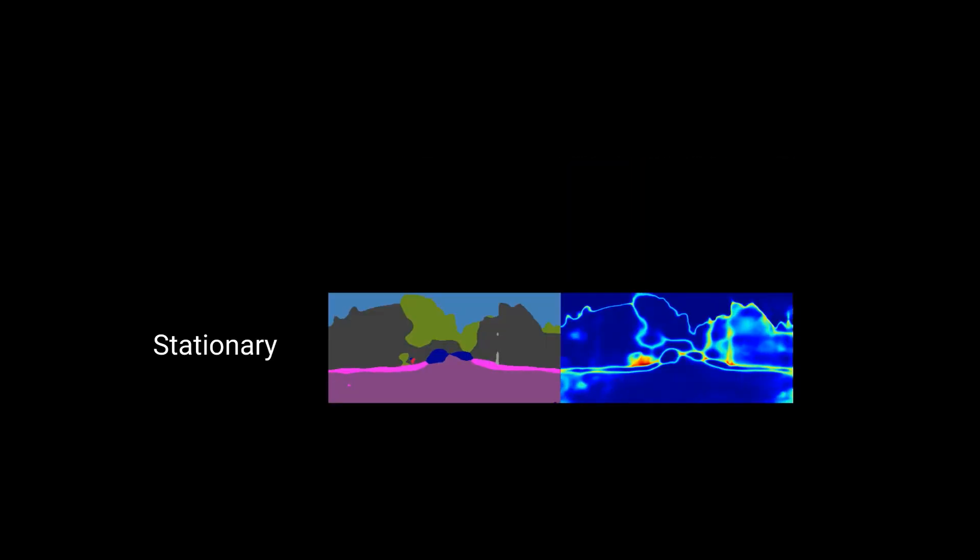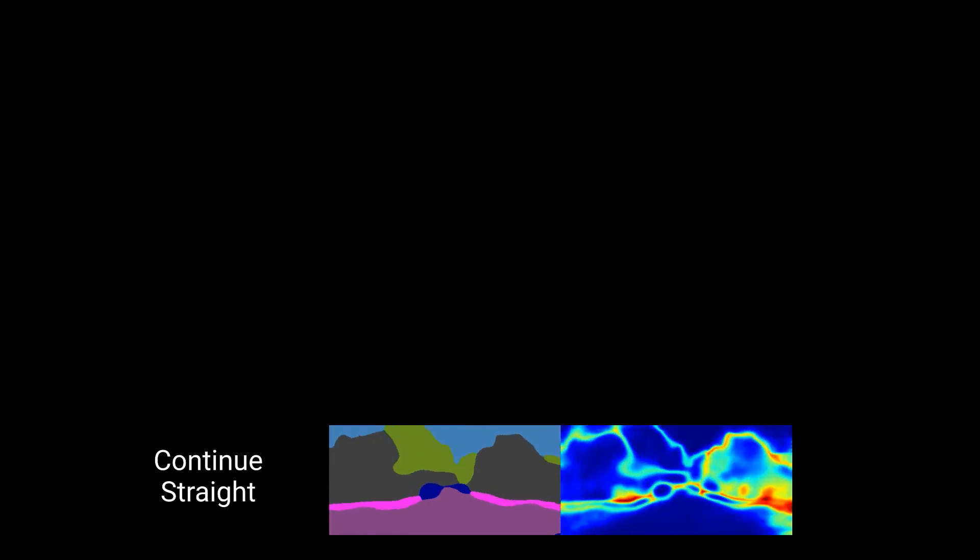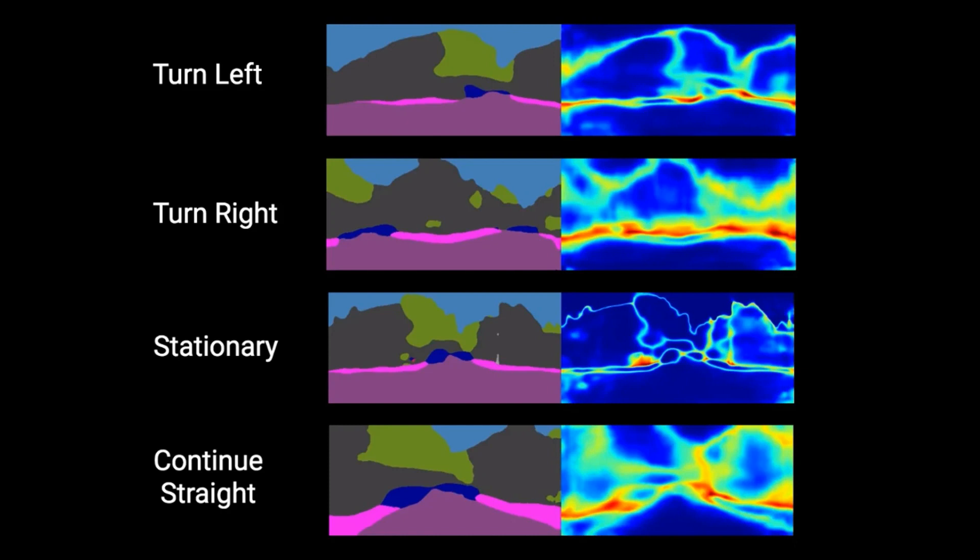Our first sample corresponds to a left turn. We sample again and get another plausible future, a right turn. The next future scenario corresponds to stopping or giving way. And finally, we see the car continuing straight. Our model imagined four different driving maneuvers at this intersection. This example demonstrates that our model is able to learn a probabilistic embedding capable of predicting multimodal and plausible futures.